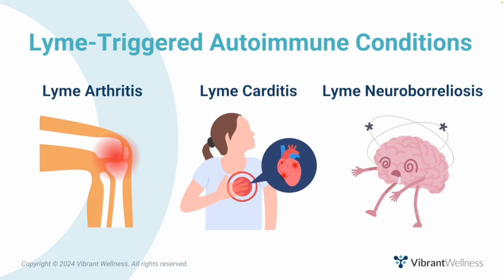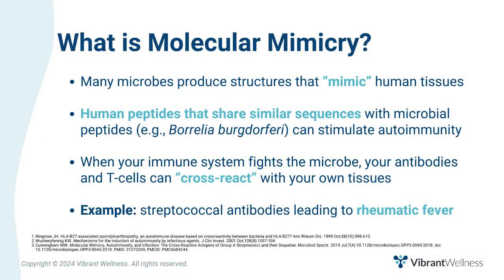Specifically, through molecular mimicry, Lyme disease can trigger three autoimmune conditions: Lyme arthritis, Lyme carditis, and Lyme neuroborreliosis. Molecular mimicry is when your immune system accidentally makes antibodies against self-tissue that looks like a component of a dangerous microbe. This occurs because many microbes produce structures that resemble or mimic structures found in human tissues. When your immune system fights against the microbe, your antibodies and T-cells can cross-react with your own tissue. One well-known example is antibodies against streptococcal bacteria cross-reacting with heart tissue, leading to rheumatic fever.